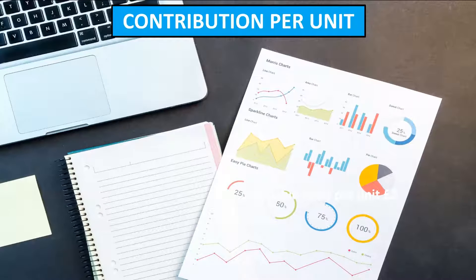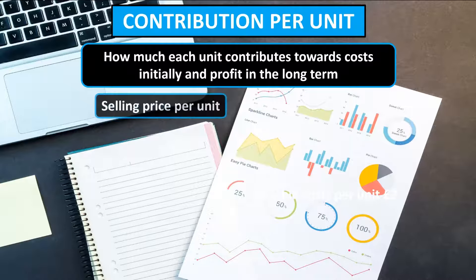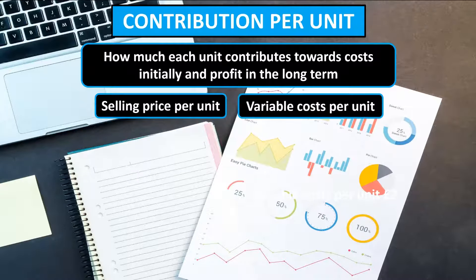We're now going to move on to the concept of contribution, which is a very important financial concept in business and essential to calculate the breakeven point. It essentially looks at the profit made on individual products and shows the business how much each unit contributes towards costs initially and profit in the long term. It relies on two essential elements: the selling price per unit and the variable cost per unit.